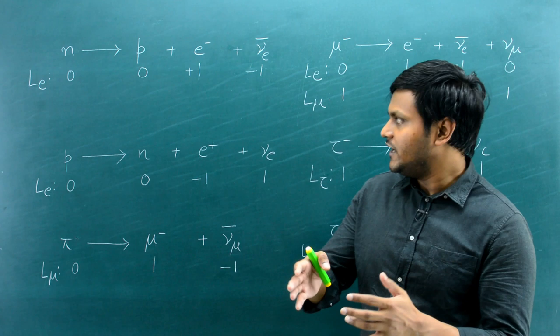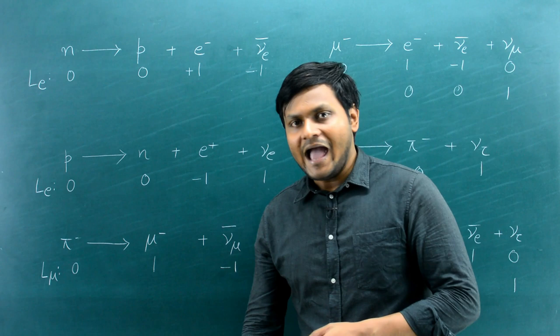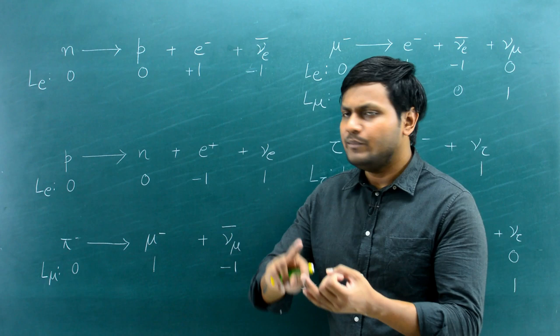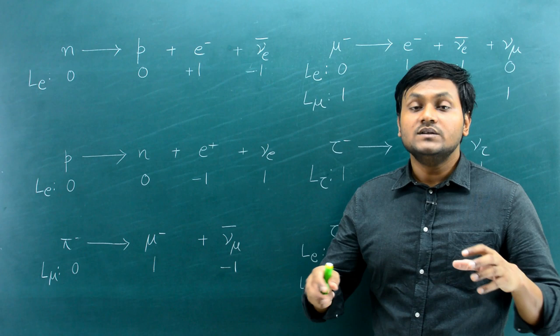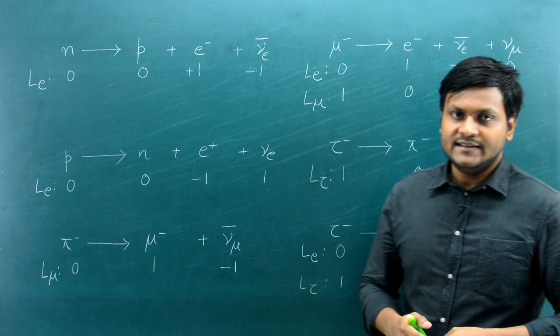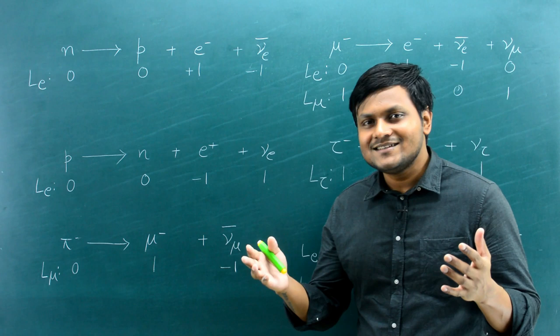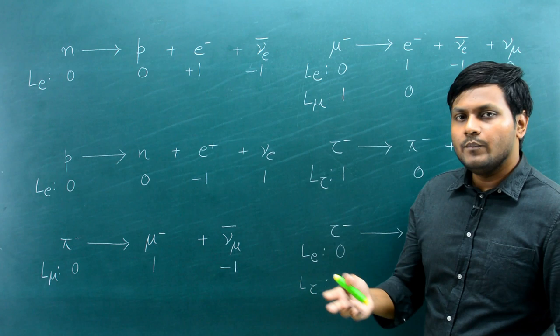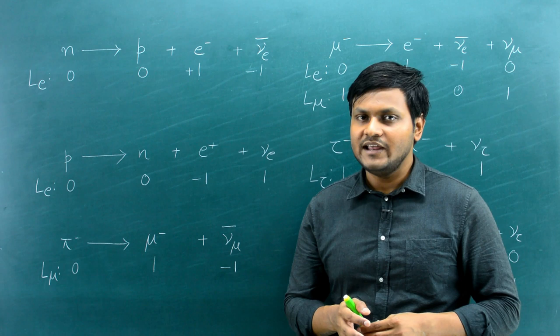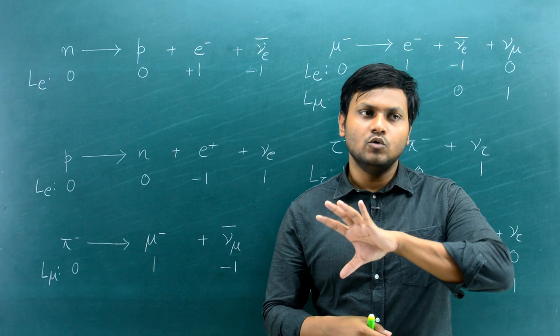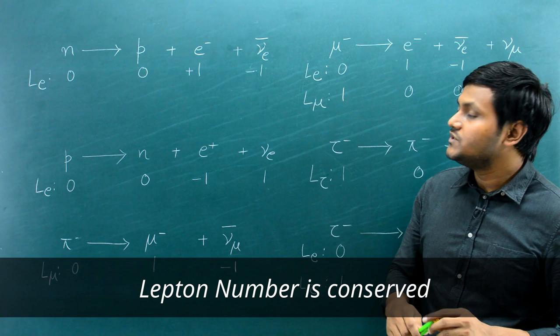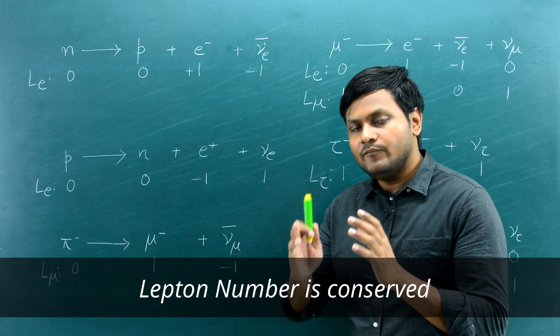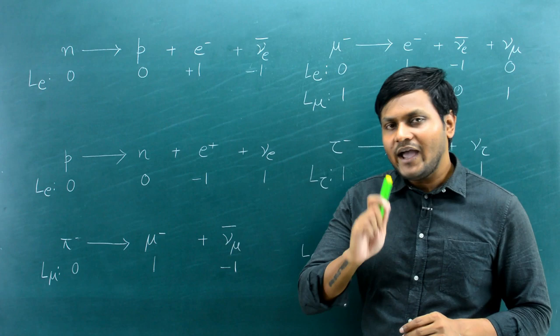When we associate the electron, muon, and tau families with their distinct lepton numbers, these quantum numbers are conserved in different kinds of particle interactions. This gives you a set of rules to determine what interactions are possible and which are not. The lepton quantum number is always conserved, except in neutrino oscillations, where it is not conserved as a particle travels from one point to another. Apart from that, in almost all other particle interactions, the lepton quantum number is conserved.